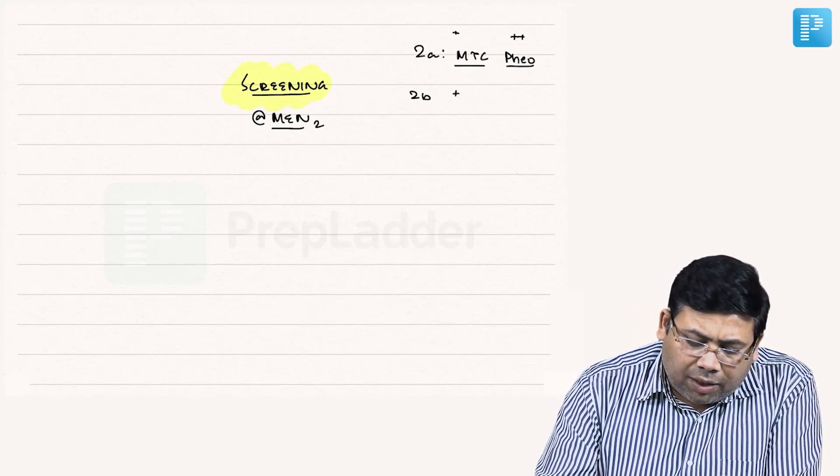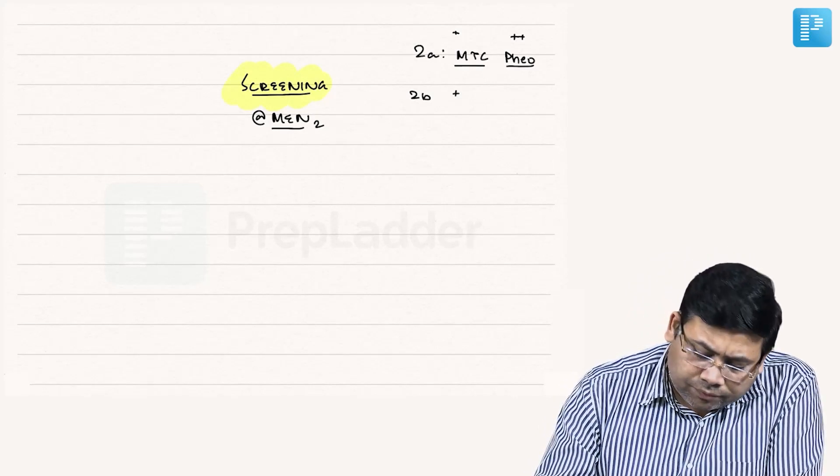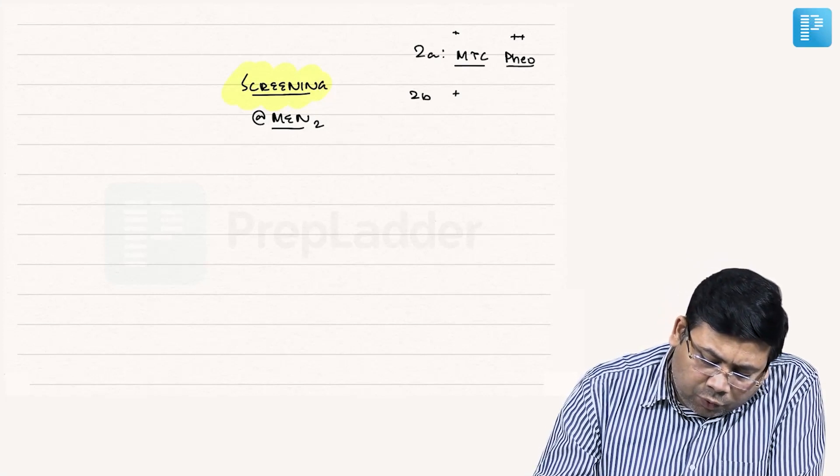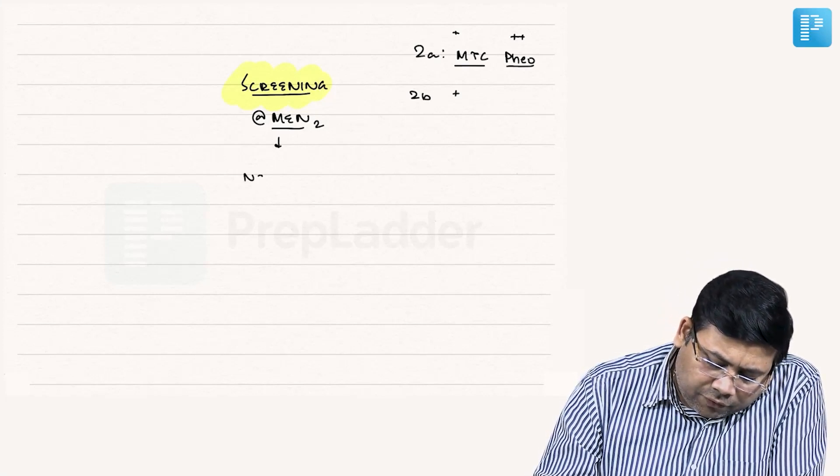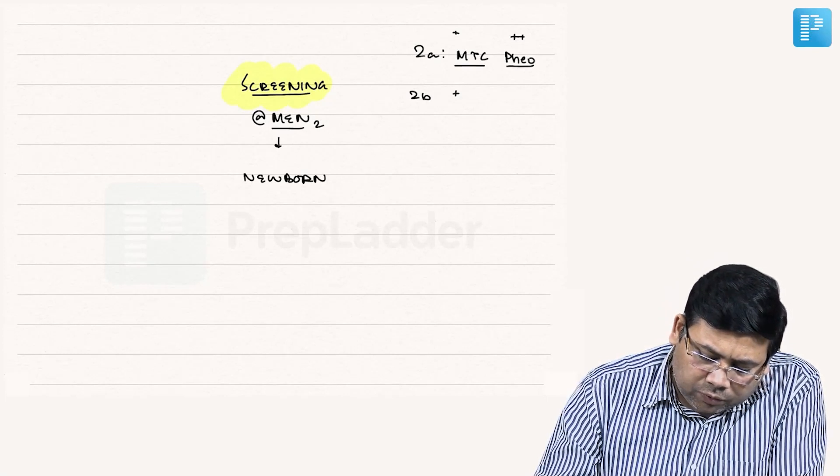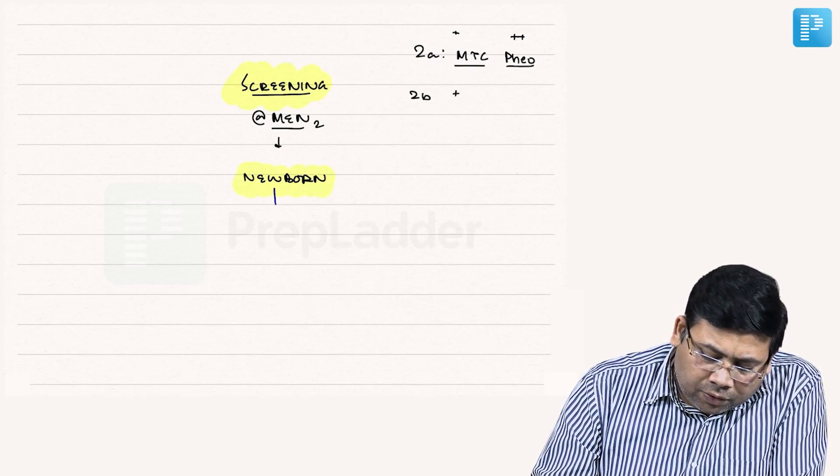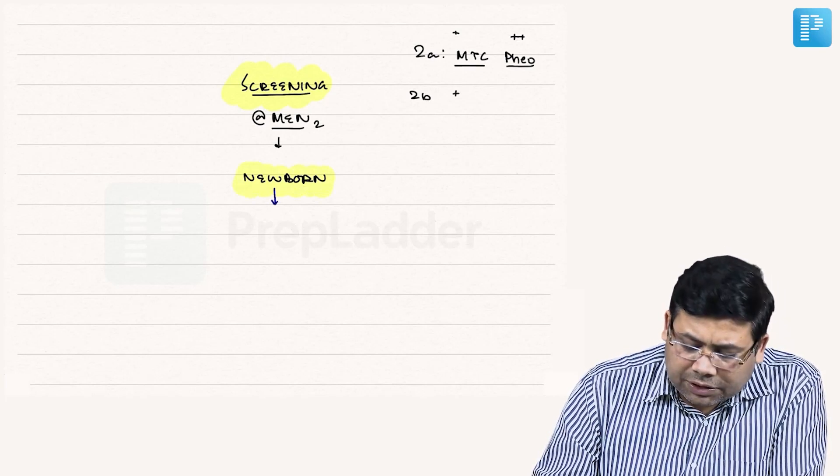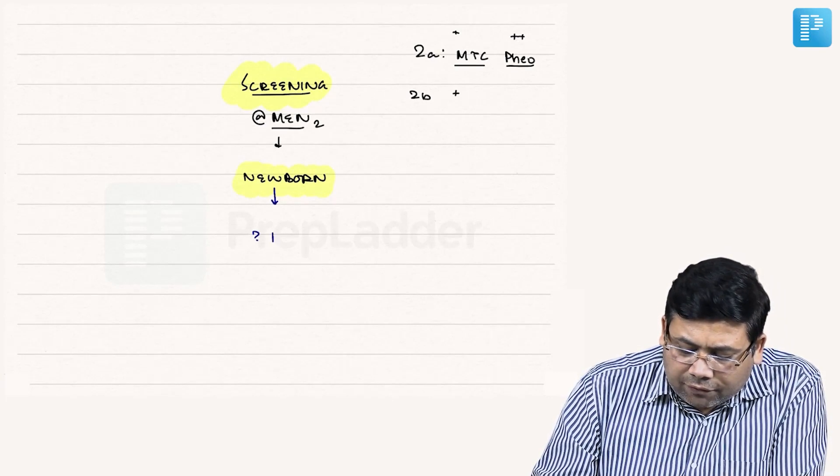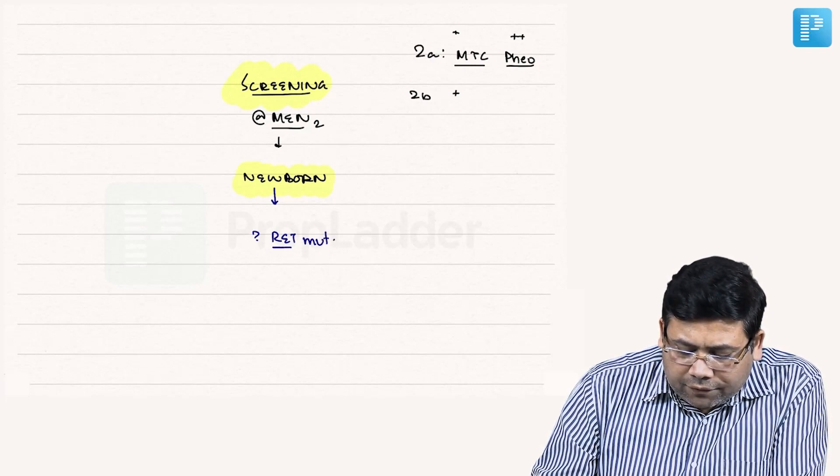Whenever we have a newborn in a family of MEN2, they may be suspicious and we have to check for RET proto-oncogene mutation.